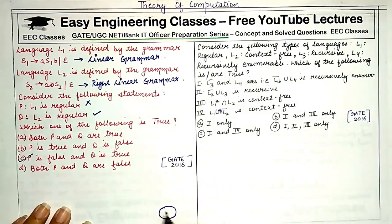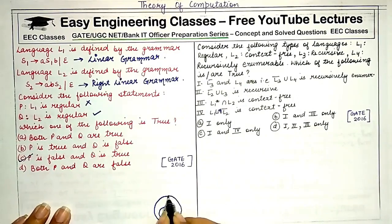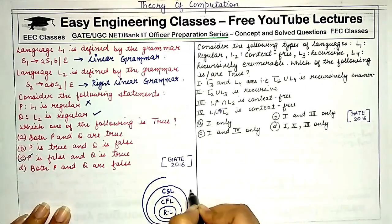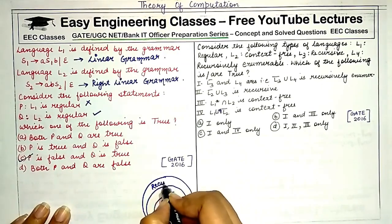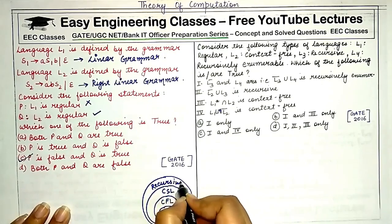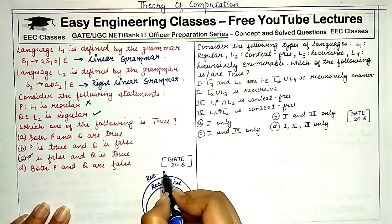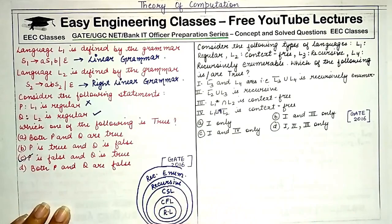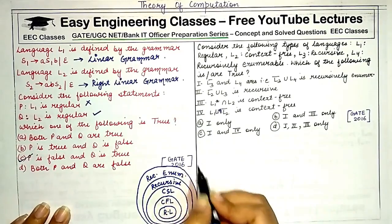The hierarchy of languages is such that the set of regular languages is contained inside context-free languages, which is contained inside context-sensitive languages, which is contained within the set of recursive languages, and recursive languages are contained within recursively enumerable languages.